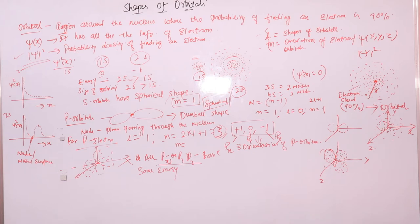For nodes in P orbitals: the 2P orbital has no node, the 3P orbital has 1 node, and the 4P orbital has 2 nodes.